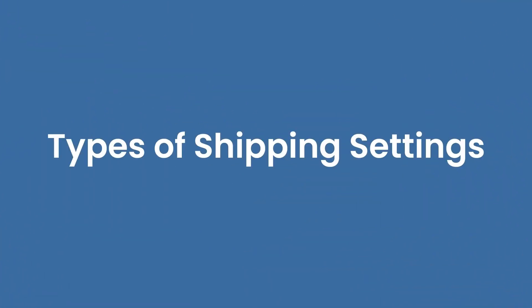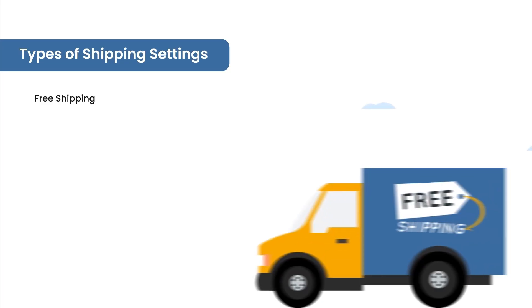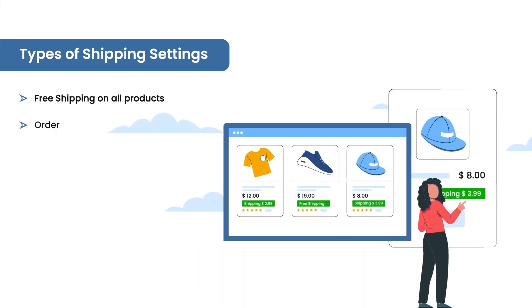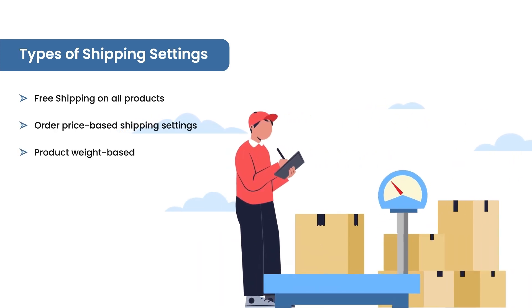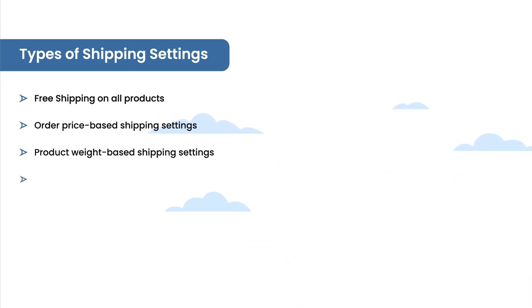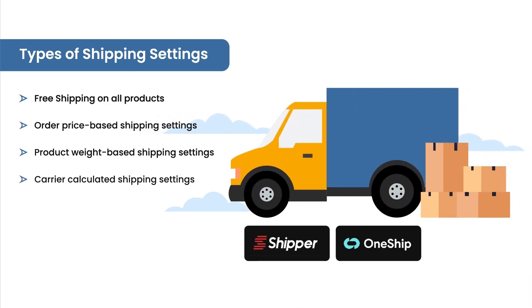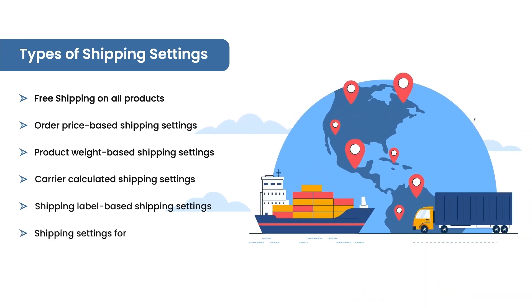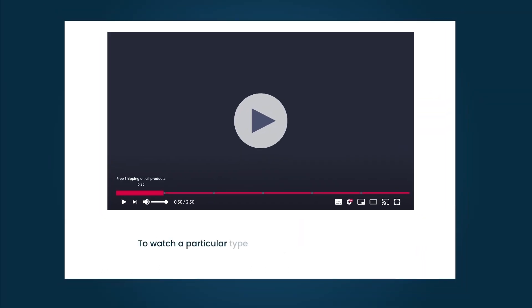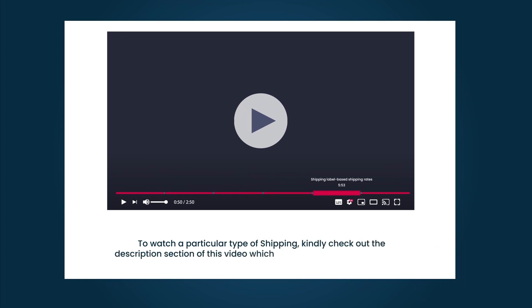In this video, we will cover the following types of shipping settings: free shipping on all products, order price based shipping settings, product weight based shipping settings, carrier calculated shipping settings, shipping label based shipping settings, and shipping settings for additional countries. To watch a particular type of shipping, kindly check out the description section of this video which has the timestamps mentioned.